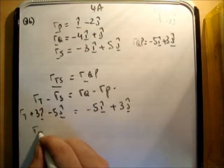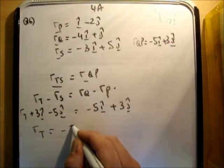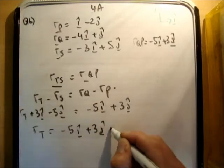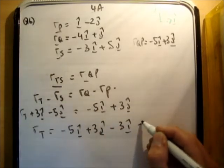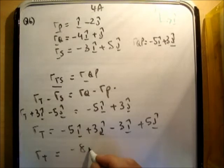So if we just rearrange that, you're going to get RT is equal to negative 5 I hat plus 3 J hat, negative 3 I hat, positive 5 J hat, and that RT is equal to negative 8 I hat plus 8 J hat.